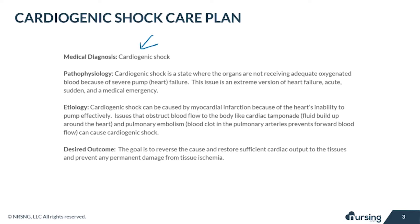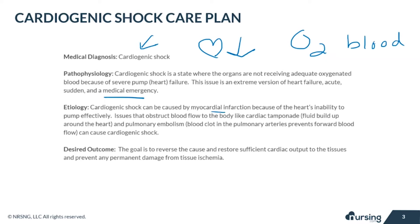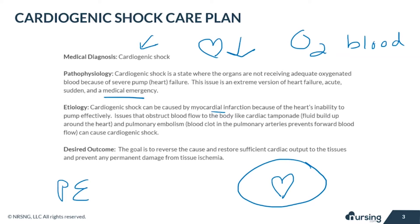The medical diagnosis is cardiogenic shock, which is an acute and extreme version of heart failure where the organs are not receiving adequate oxygenated blood. Cardiogenic shock is most definitely a medical emergency. It can be caused by myocardial infarction due to the heart's inability to pump effectively, cardiac tamponade — a buildup of fluid around the heart that compresses and prevents functional pumping — and pulmonary embolism, where a blood clot in the pulmonary arteries prevents forward blood flow. The desired outcome is to reverse the cause and restore sufficient cardiac output.